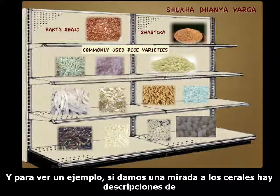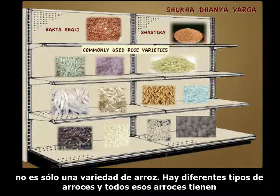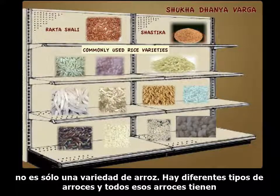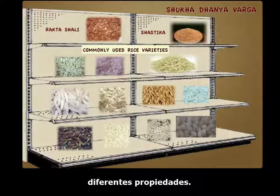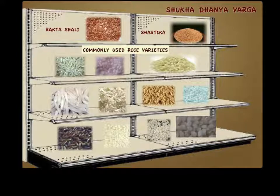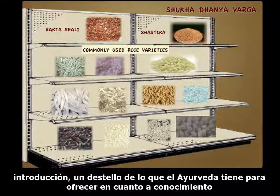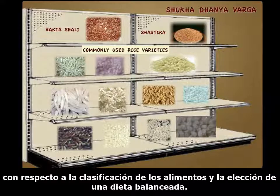As an example, if you look at the cereals, there are descriptions of different types of rice, and rice itself varies in properties — different types of rice all have different properties. This is the overall approach to classification of foods. What we have discussed today is only a brief introduction, a glimpse of what Ayurveda has to offer when it comes to knowledge regarding classification of foods and choosing a balanced diet.